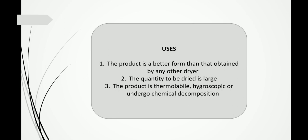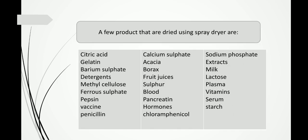There are many products which can be spray dried: citric acid, gelatin, barium sulphate, detergent, methylcellulose, ferrous sulfate, pepsin, vaccines, penicillin, calcium sulfate, acacia, borax, fruit juices, sulfur, blood, pancreatin, hormone, chloramphenicol, sodium phosphate, some extracts, milk and milk-related products, lactose, plasma, vitamins, serum, and starch.